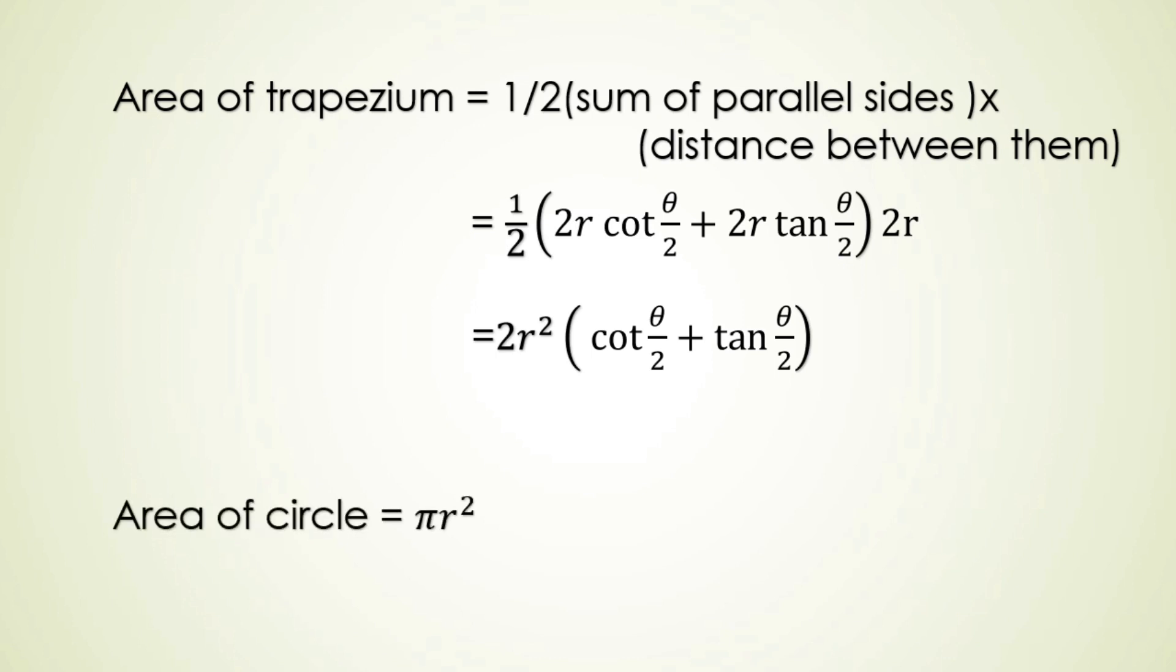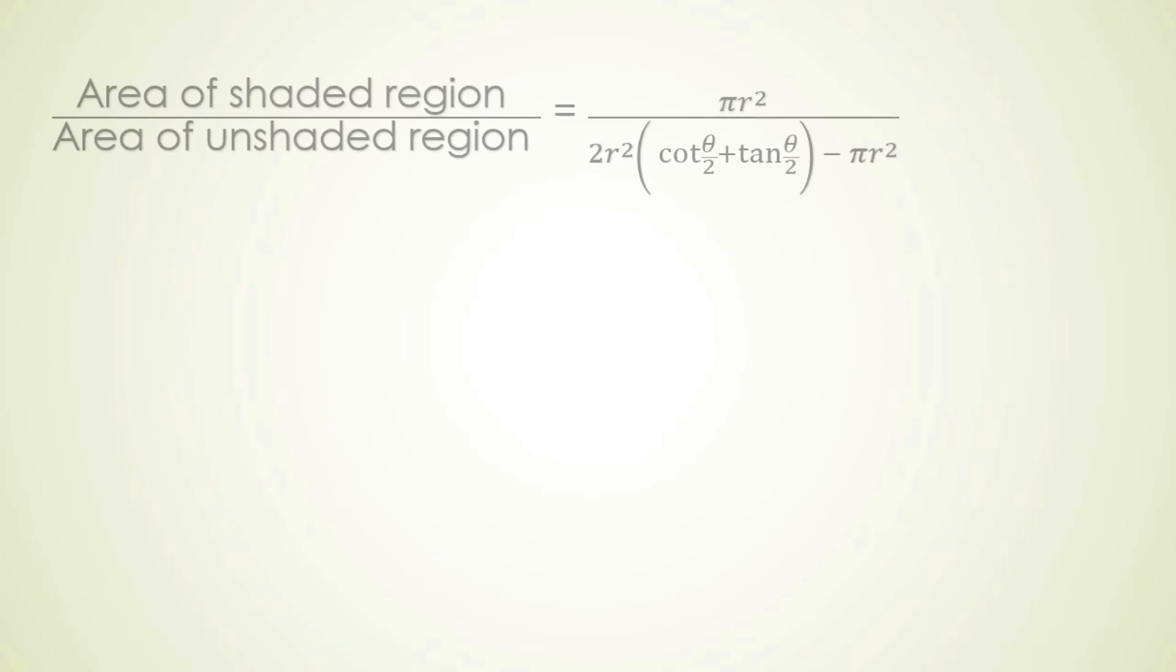Now area of shaded region is equal to pi r square since only circle is shaded here and rest of the area is unshaded. So area of shaded region upon area of unshaded region is equal to pi r square upon 2r square bracket cot theta by 2 plus tan theta by 2 minus pi r square.